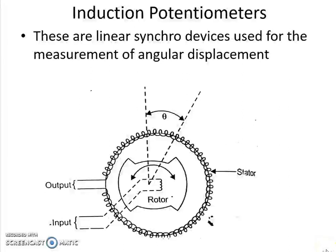Now let us discuss about induction potentiometers. These are linear synchro devices which provide an accurate measurement of shaft rotation about a reference position, in the form of a voltage whose magnitude is proportional to the angular displacement. The phase relationship indicates the direction of shaft rotation. These linear synchro devices are basically used for the measurement of angular displacement.